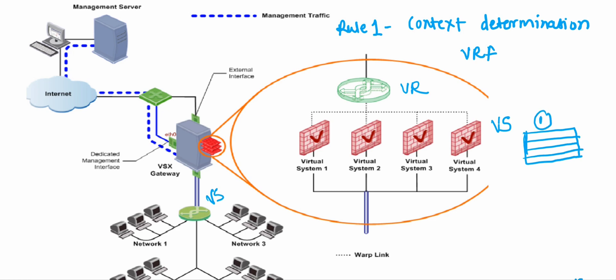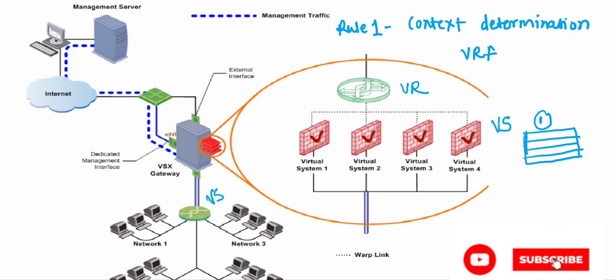A routing domain is designated for one virtual system or one virtual router. So in an entire VSX gateway, if you have multiple virtual routers and virtual systems, you will have multiple routing domains. Due to these routing domains, virtual devices can use overlapping IP addresses — useful when you have IP address limitations and need to reuse them for internal or separate networks.